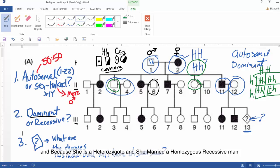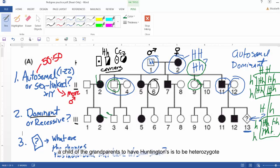And because she's a heterozygote and she married a homozygous recessive man, if you do the Punnett square there, you'll see that the only possibility for a child that has the disease is to be heterozygote as well.